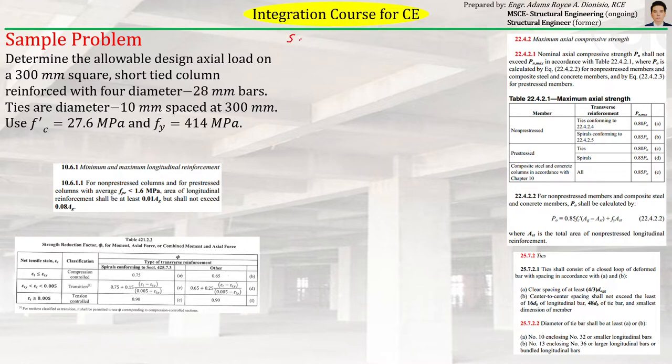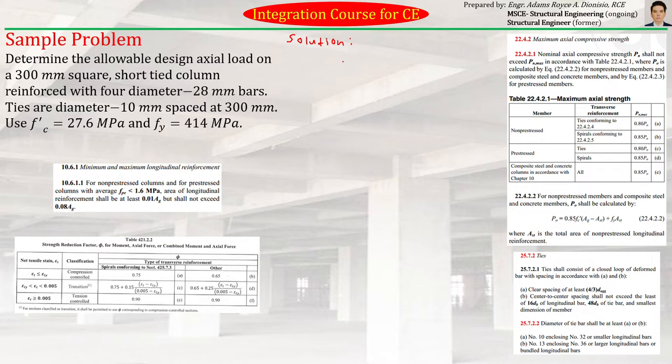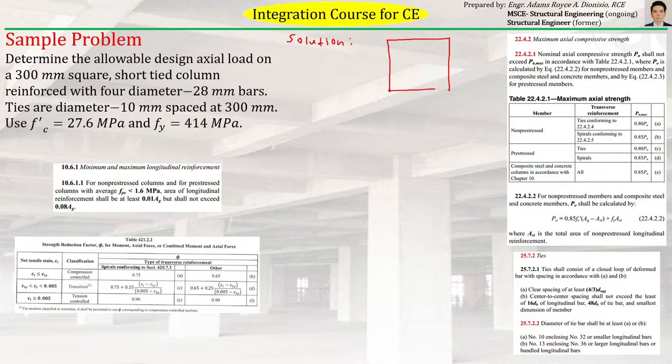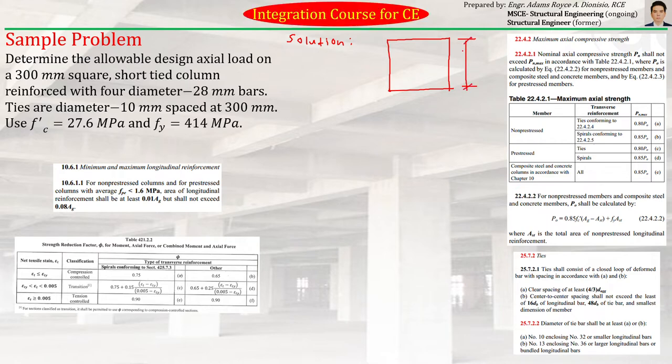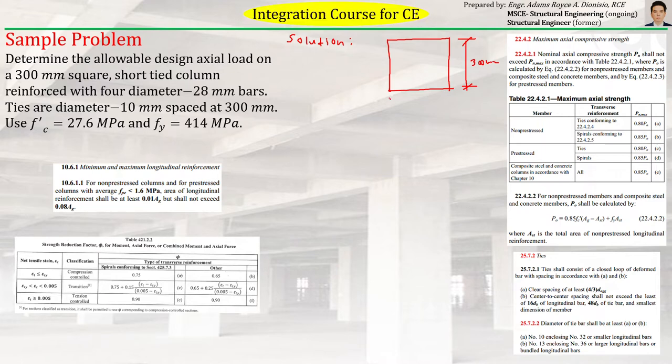Let's try to visualize the column section that is being described by the question. So we have a square column. The dimension of one side is 300 mm. So this is 300 mm, and of course, this is also 300 mm since it is square.